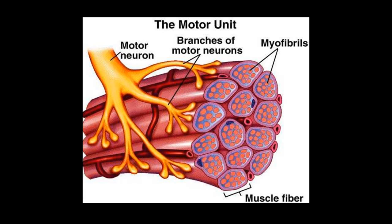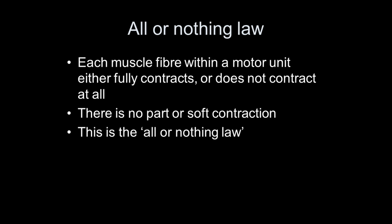Let's go back to some key terms. A motor unit is a motor neuron and its associated muscle fibers, and can be type 1, type 2a, or type 2b. The all-or-nothing law states that each muscle fiber within a motor unit either fully contracts or does not contract at all — there's no half contraction. So if the neuron fires and causes the contraction of the muscle fiber, it will either contract fully or not at all.